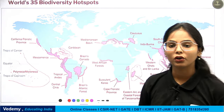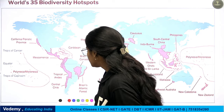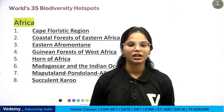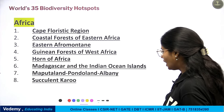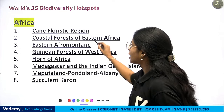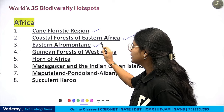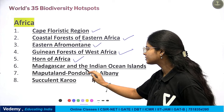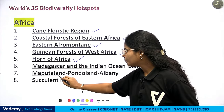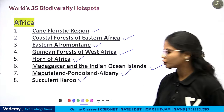How many biodiversity hotspots are there in the world? There are 35 biodiversity hotspots, which you can see as pink-colored areas on the map. Africa has 8 biodiversity hotspots: Cape Floristic Region, Coastal Forests of Eastern Africa, Eastern Afro-Montane, Guinean Forests of West Africa, Horn of Africa, Madagascar and the Indian Ocean Islands, Maputaland-Pondoland-Albany, and Succulent Karoo.